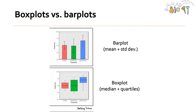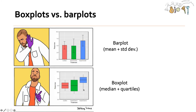A brief aside about bar plots versus box plots: you can use either to visualize differences in groups against a continuous variable. In bar plots, the top of the bar represents the mean and the error bars represent standard deviations. In a box plot, the thick line represents the median and the other points represent the quartiles. I personally prefer box plots because in bar plots you lose all the variation, since the bar goes all the way to zero, whereas you can actually see that variation in box plots.